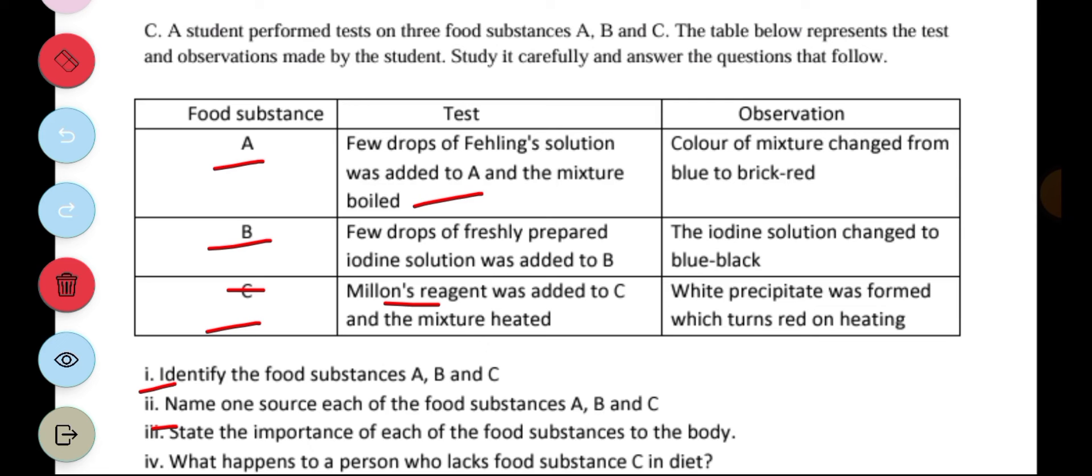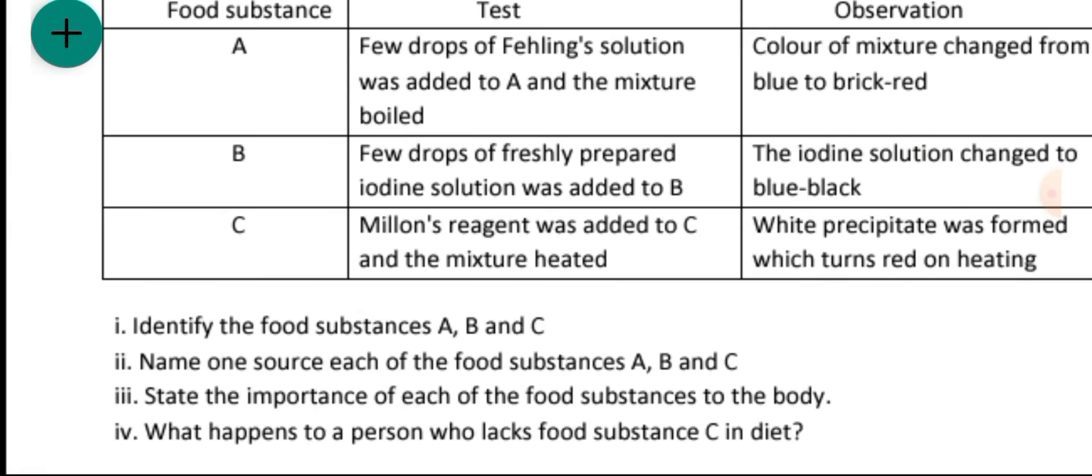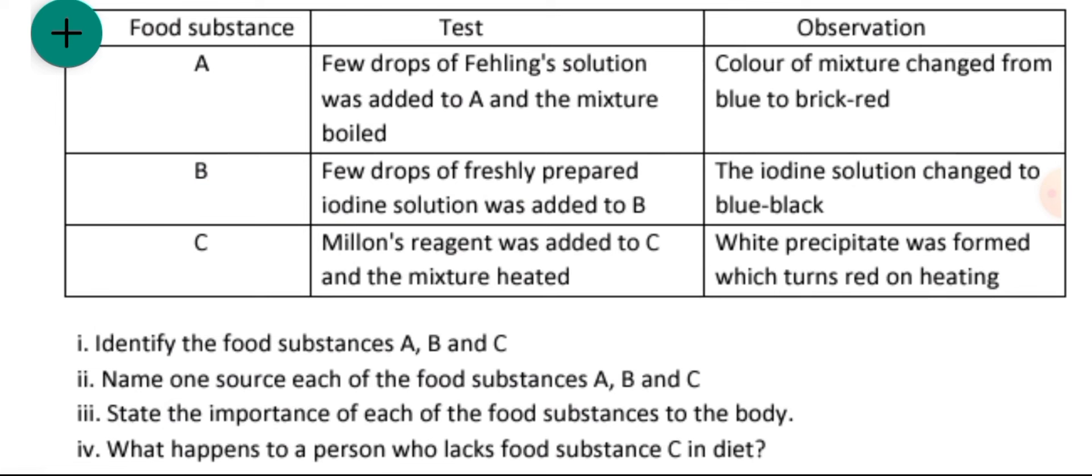State the importance of the food substances to the body. A, which is banana, is a good source of energy. B, which is cassava, is also a good source of energy. And C helps to repair worn out tissues.